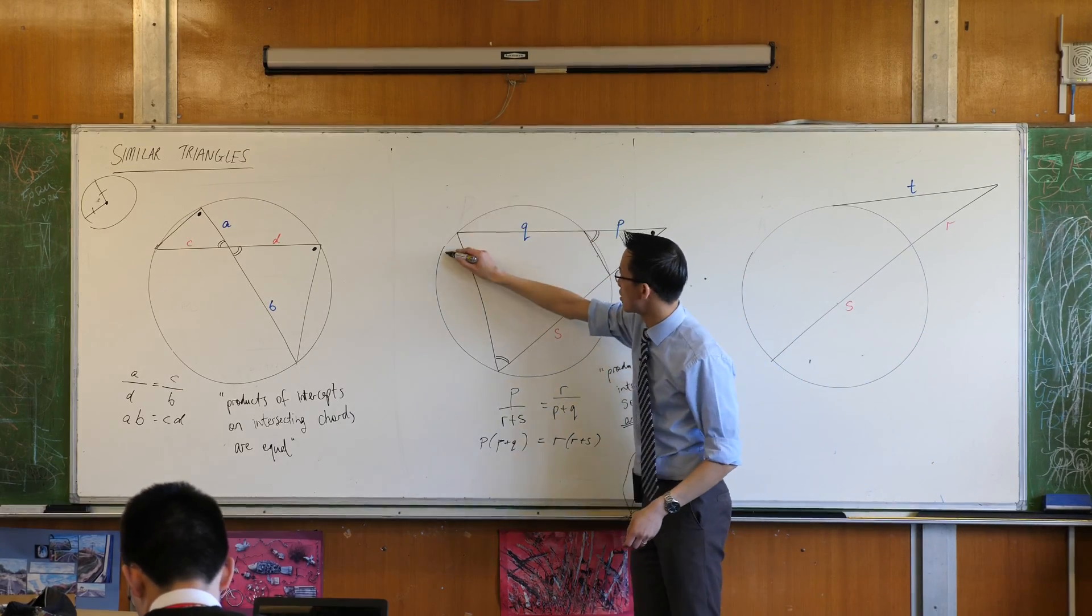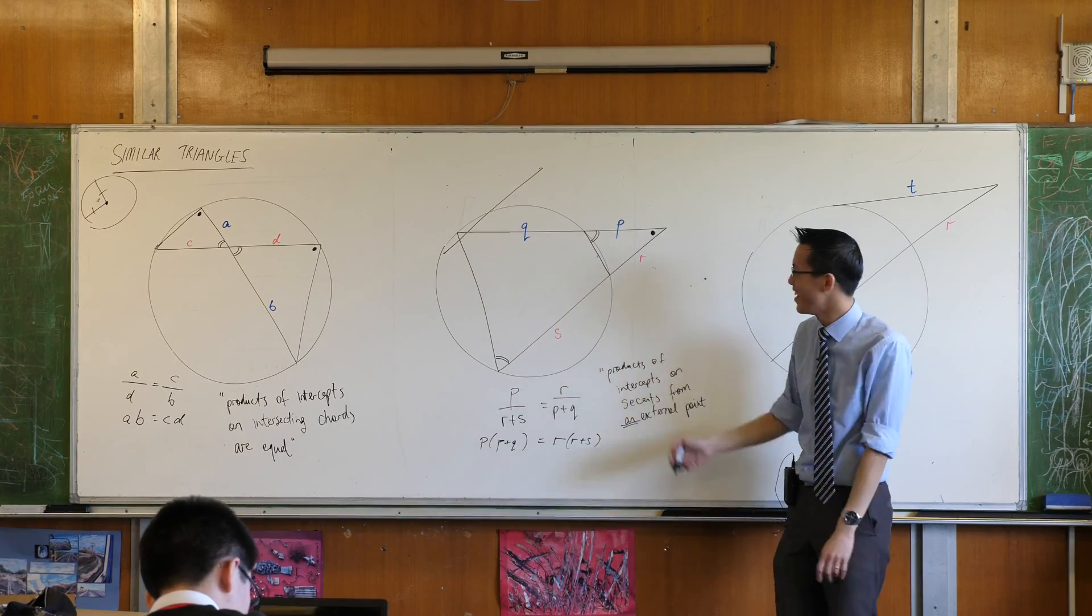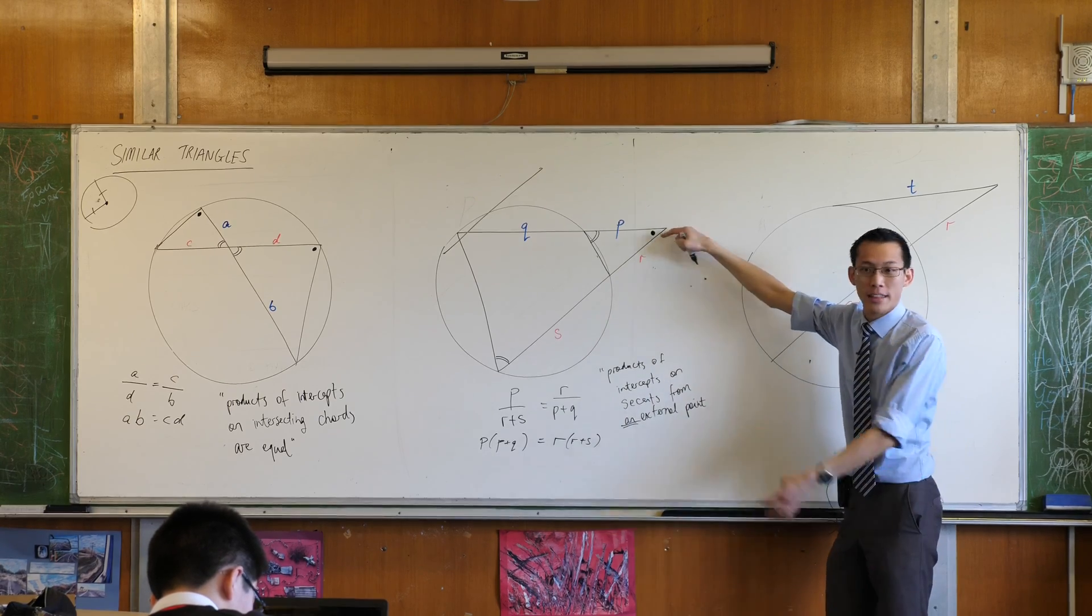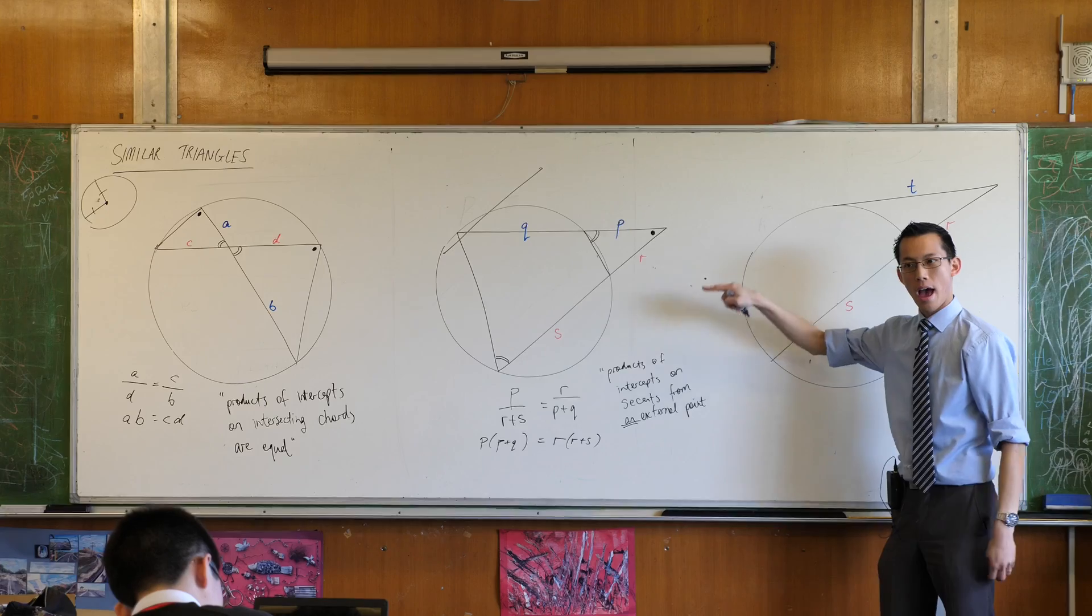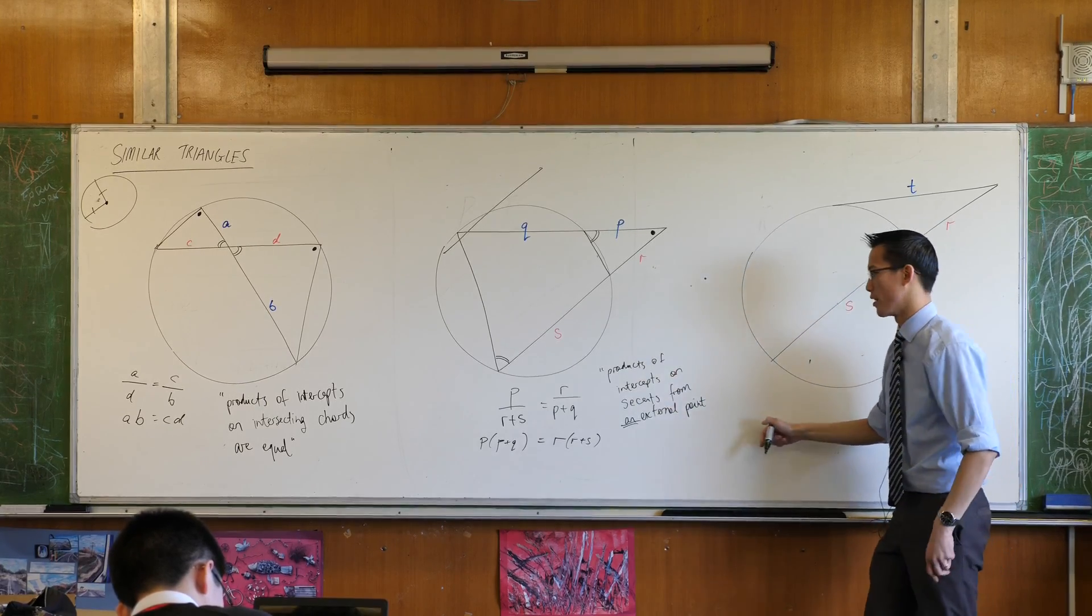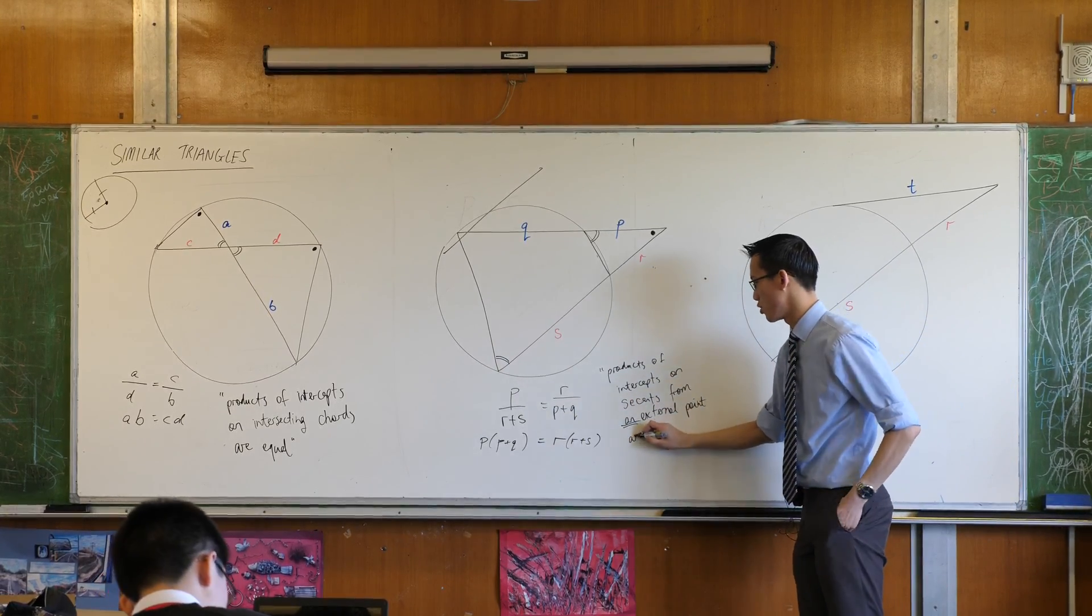You can't just take secants from wherever you like and just like, oh I've got this guy over here and he's related, it's like he has no relationship with that guy. It's because they both come from here that you get the similar triangles. Does that make sense? So products of intercepts on secants from an external point, same deal, same equality relationship.